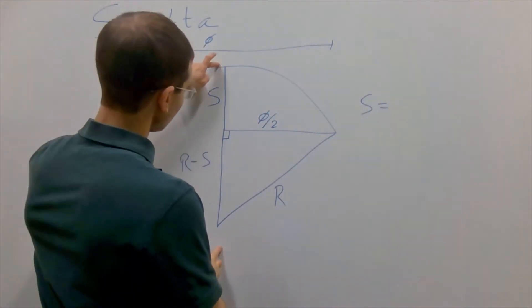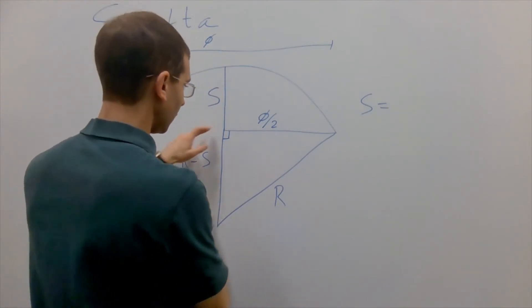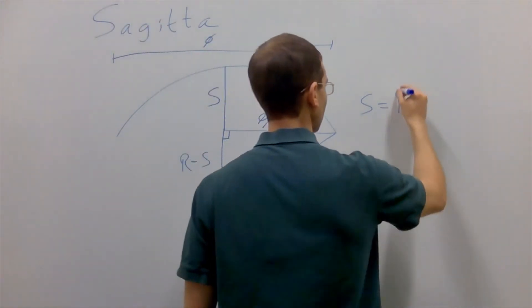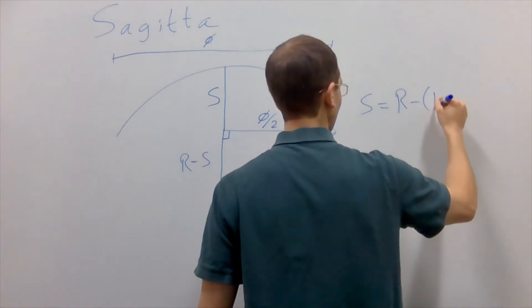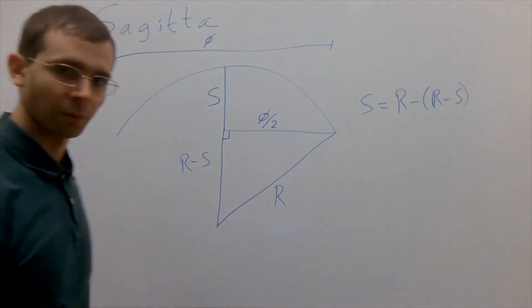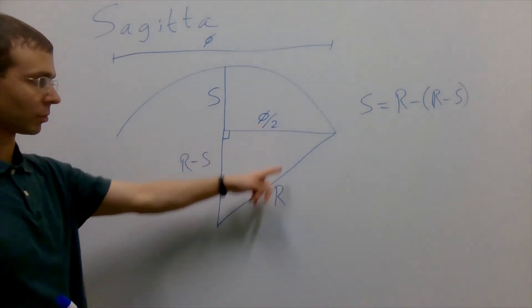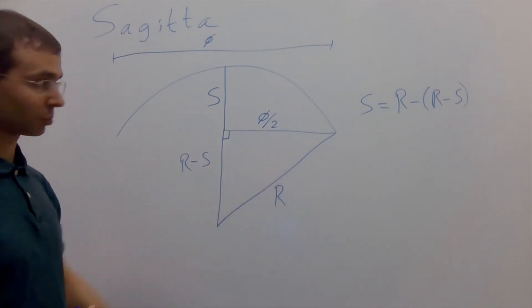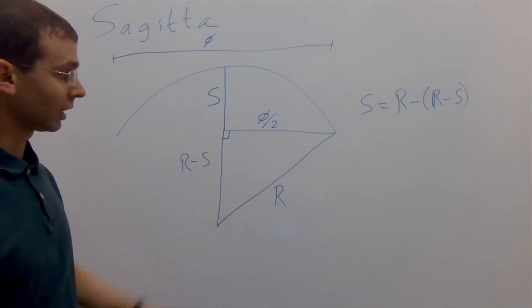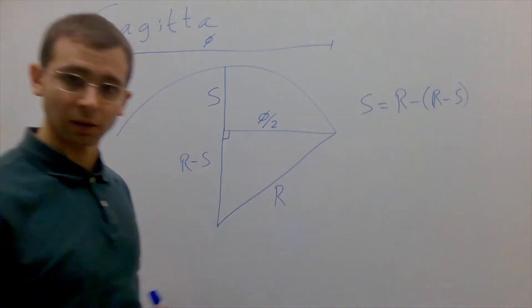The SAG is going to be this whole length here minus this portion here—the radius minus radius minus SAG. Well, that's not terribly informative yet, but in that form we can think of our Pythagorean theorem and get an expression for this in terms of just our phi and radius.